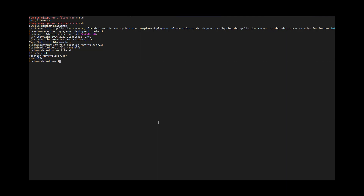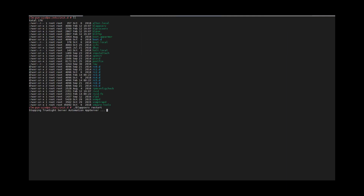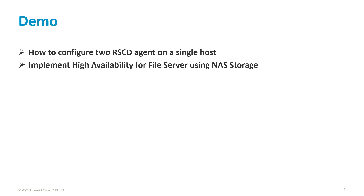Once this is completed, we need to restart the application server. Let's restart the application server. It has started. With this we have completed the demo on how to configure two RSD agents on a single host and implementation of high availability for the file servers using NAS storage.